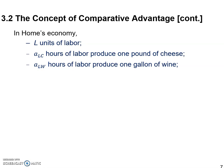More generally, you can also say you just care about the U.S. domestic economy versus the rest of the world, and this model works as well. In the home economy, they have L units of labor — that's the total labor endowment, which is given. ALC is the number of hours of labor used to produce one pound of cheese, and ALW means the number of hours of labor used to produce one gallon of wine. So in this hypothetical model, both economies are producing only cheese and wine.